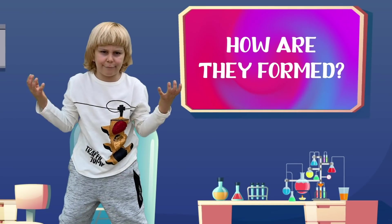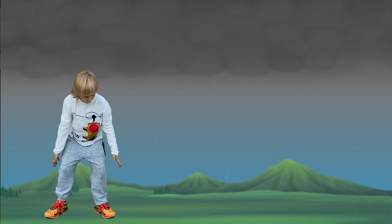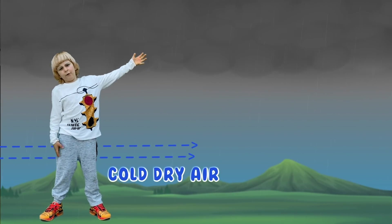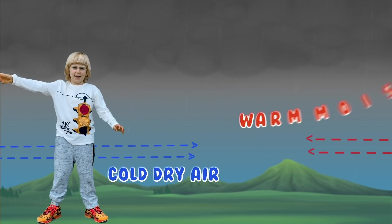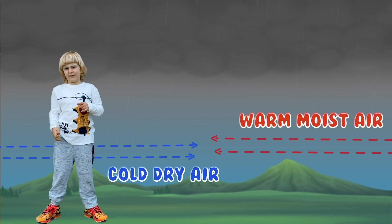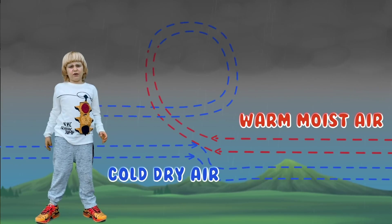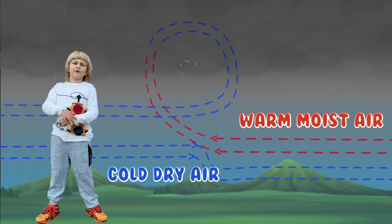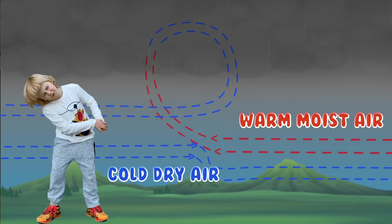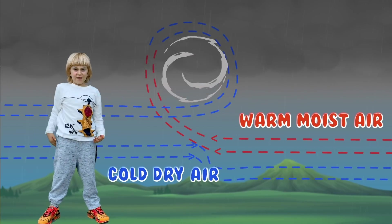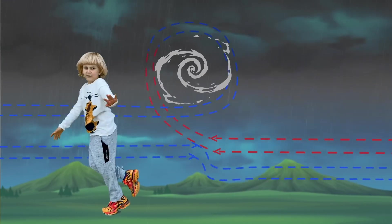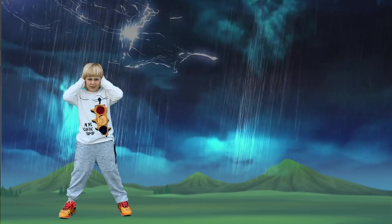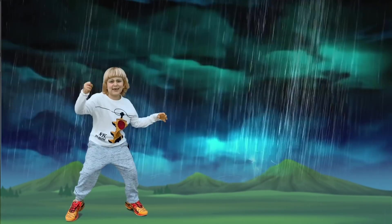So how are they formed? First, when dry cold air coming from one direction meets hot, wet or moist air coming from another direction — because the dry air is heavier or denser, it goes under the warm air, pushing it right up very fast. This way a spin is created, which is loud, strong, and scary!